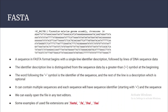The greater-than symbol is followed by the identifier, and the rest starting from 'Plasmodium chromosome 14' is the description part. A FASTA file can contain multiple sequences, and each sequence follows the same format: a header line followed by the sequence. Common file extensions for FASTA are .fasta, .fa, .fna for nucleic acid sequences, and .faa for amino acid sequences.